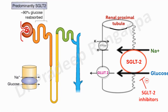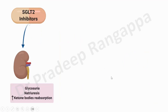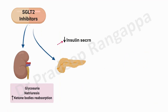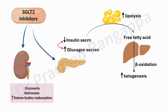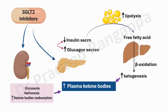Because of the glycosuria that occurs, the relative blood glucose level will be less. There will also be ketone production leading to EDKA. From a pathophysiological standpoint, someone on SGLT2 inhibitors will have glycosuria, natriuresis, and increased ketone body reabsorption. In the pancreas, as patients are diabetic, there is reduced insulin secretion and increased glucagon secretion. This reduced insulin secretion leads to increased lipolysis, free fatty acid release, and beta-oxidation leading to increased ketogenesis — the typical pathophysiological pathway of euglycemic diabetic ketoacidosis.